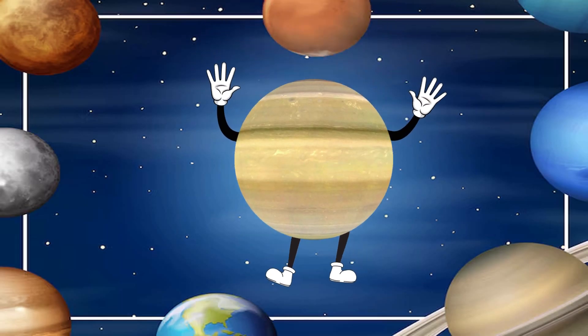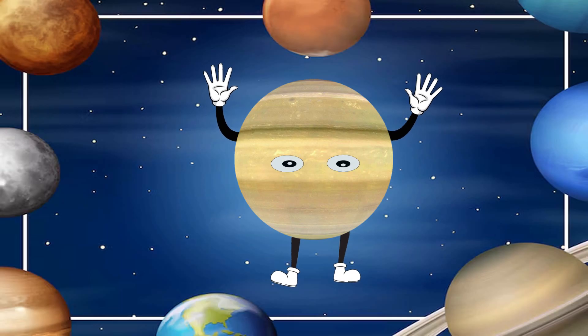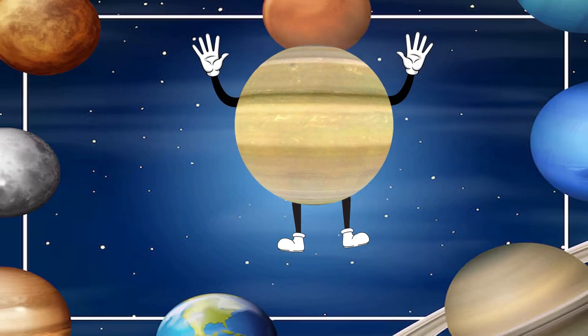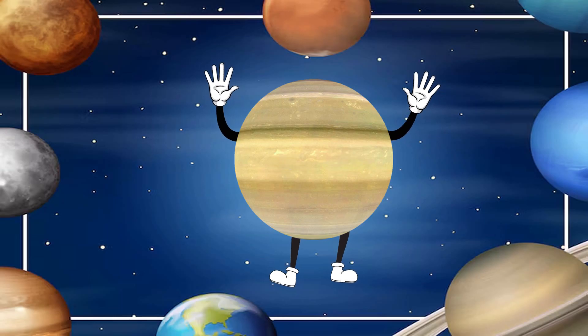My name is Saturn, I am brown in color, I'm the sixth planet from the sun. My outer rings are extremely thin, they're made of dust and icy chunks.